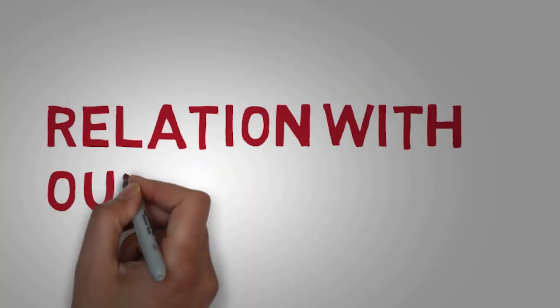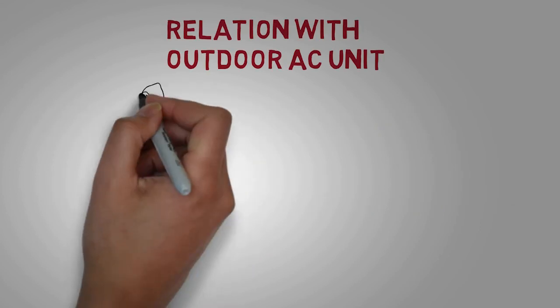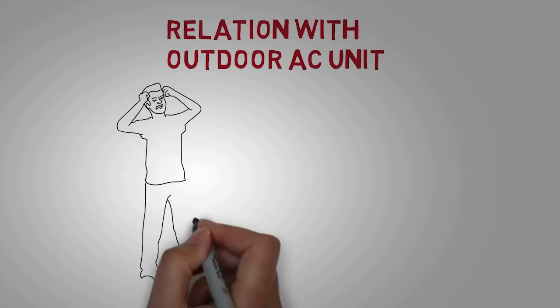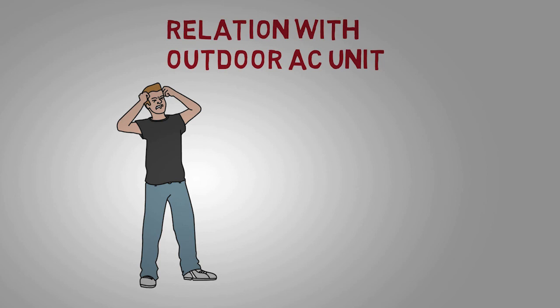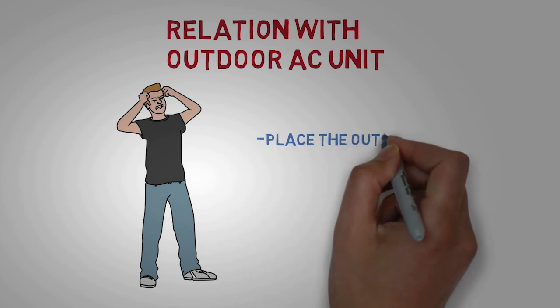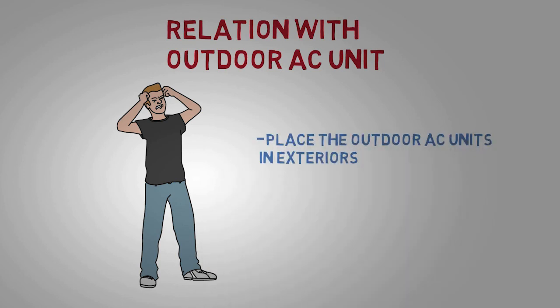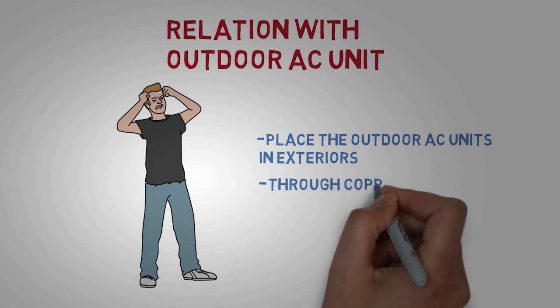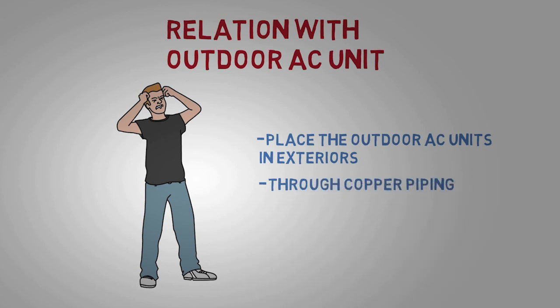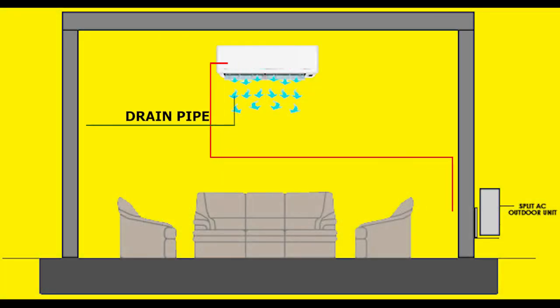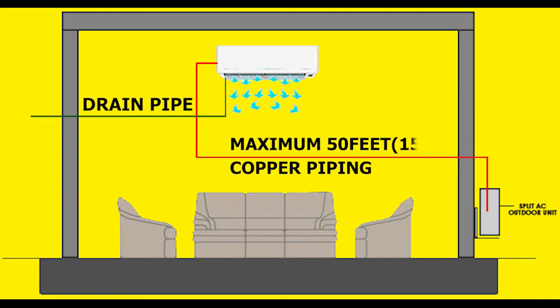Relation with outdoor AC unit: Outdoor AC units are sometimes noisy and generate vibrations, and it may disturb you. So, place the outdoor AC units in exteriors, connected to the indoor AC unit through copper piping. We recommend that the distance between the two units should not exceed 50 feet to achieve efficient cooling.